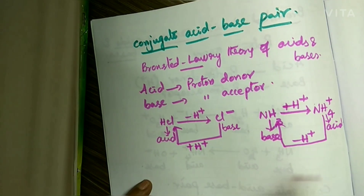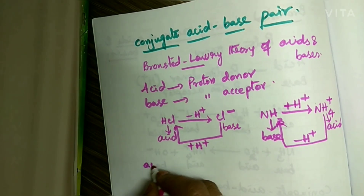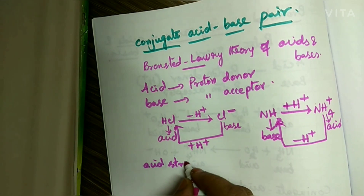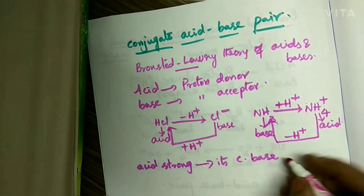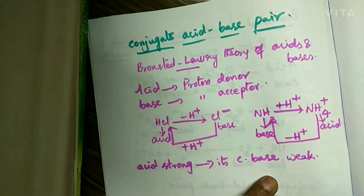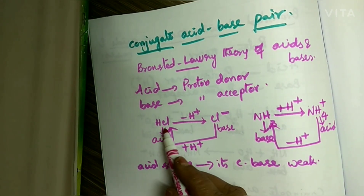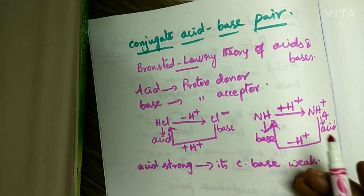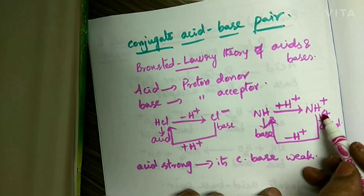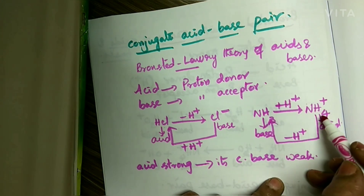We have to remember one important point: if an acid is strong, its conjugate base is always weak. In this example, HCl is a strong acid and its conjugate base Cl⁻ is a weak base. And in the ammonia and ammonium ion pair, ammonia is a strong base and its conjugate acid NH4⁺ is a weak acid.